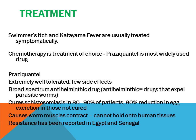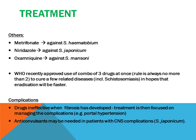Treatment. Swimmer's itch and Katayama fever are usually treated symptomatically. Praziquantel is the treatment of choice and the most widely used drug. It is well-tolerated with few side effects and is a broad-spectrum antihelminthic. It cures schistosomiasis in 80 to 90% of patients with 90% reduction in egg excretion in those not cured. Other treatments include metrifonate against S. haematobium, oxamniquine against S. mansoni, and oxamniquine against S. japonicum. WHO recently approved use of a combination of drugs at once for treatment.